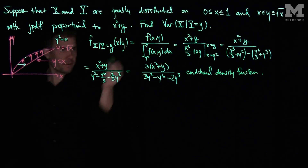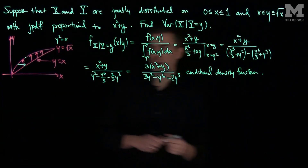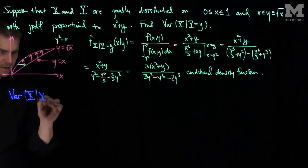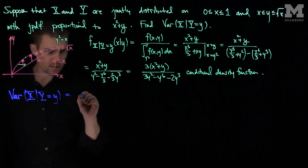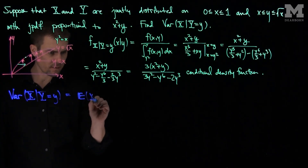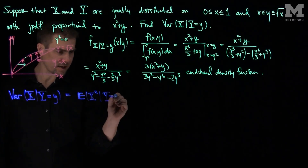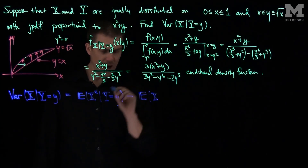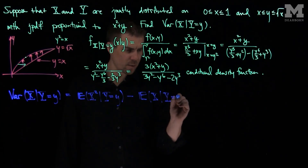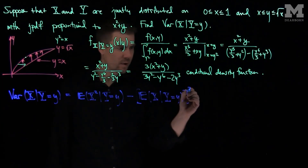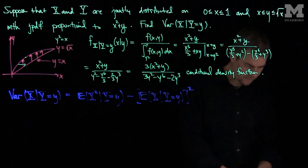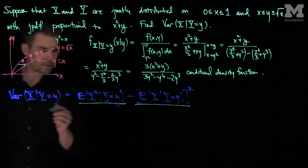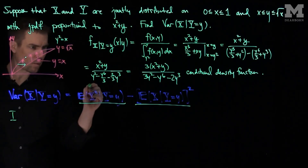To find the conditional variance, the variance of x given that y equals little y is the expected value of x squared given y equals little y, minus the expected value of x given y equals little y, quantity squared. Let's call the first term (1) and the second term (2). Both can be found using the conditional density function.